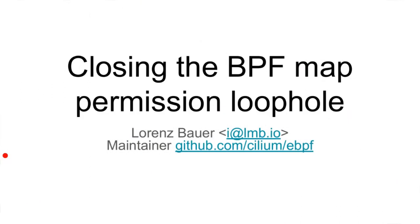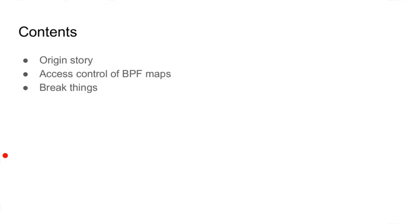Hello everyone, I'm Lawrence. I maintain a popular Go BPF library and I'm going to talk about problems with BPF map permissions. I'll go briefly across the origin story of this, how I became aware of the problem, then give an overview of how access control works for maps, and hopefully we can find a fix at the end of the session.